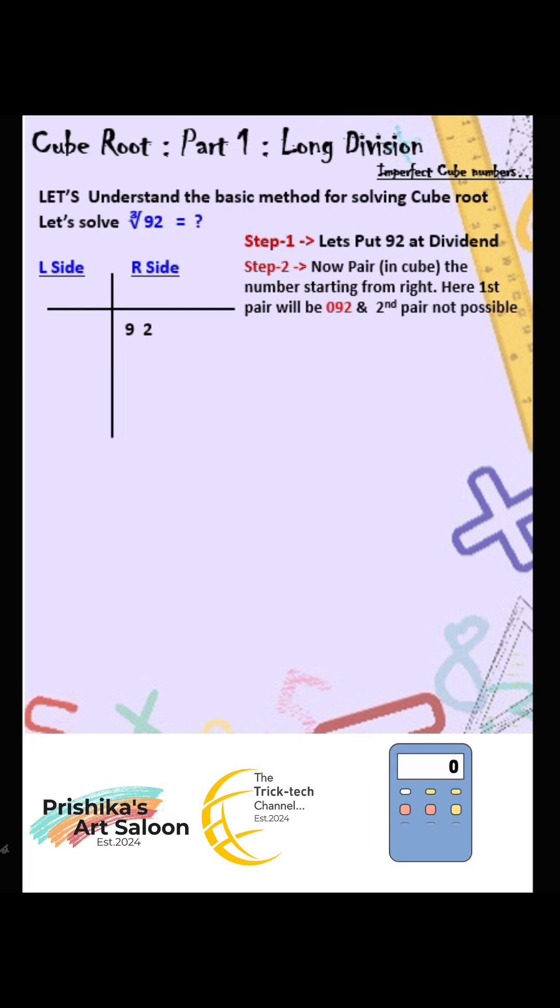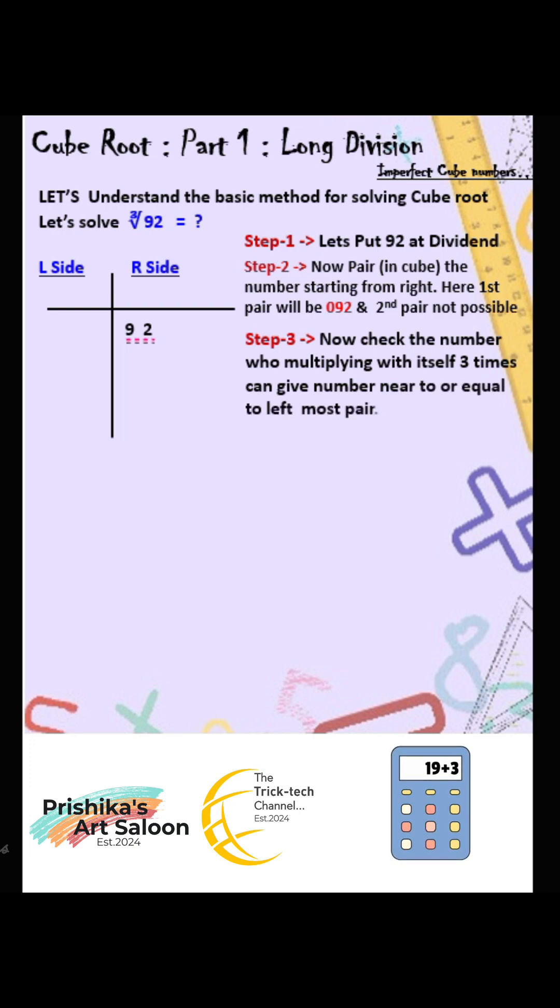Step 3: Now check the number who multiplying with itself three times can give number near to or equal to leftmost pair. In this case it is 4. Means divisor is 4.